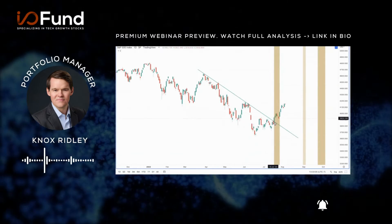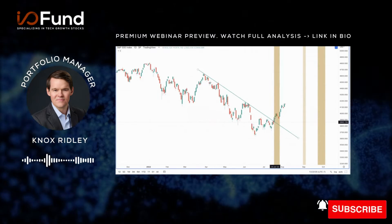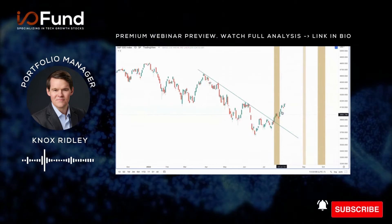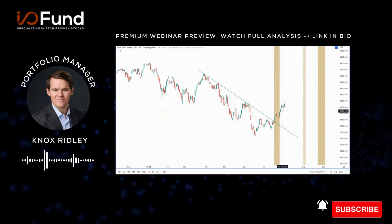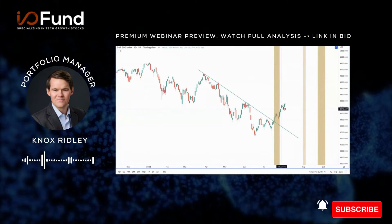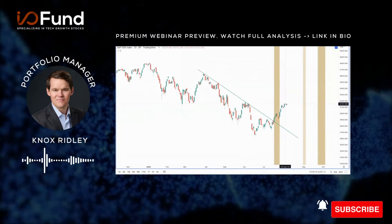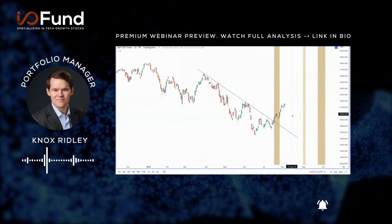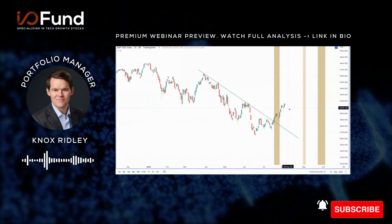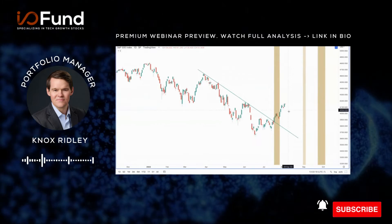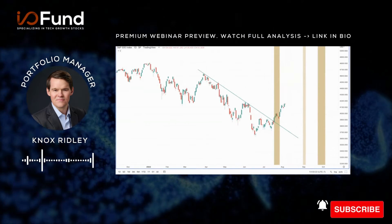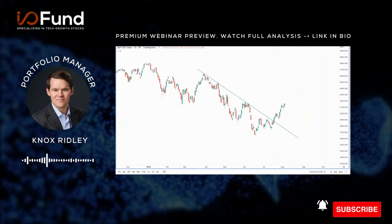We used that inflection point to really remove the bulk of our hedges and go net long. We added some back around the 4050 level, anticipating a pullback — a little early on that — but I think it's still going to be logged as a gain and add some protection.